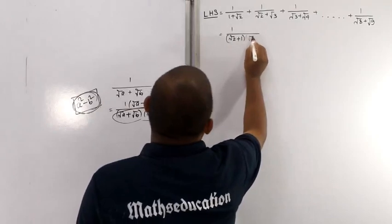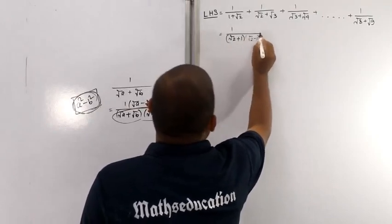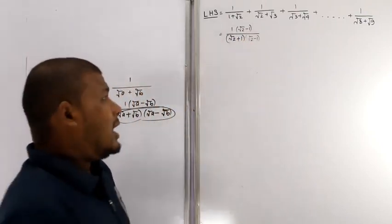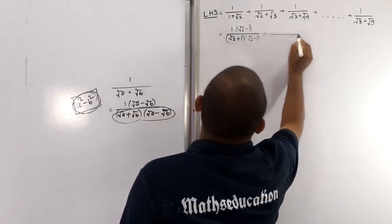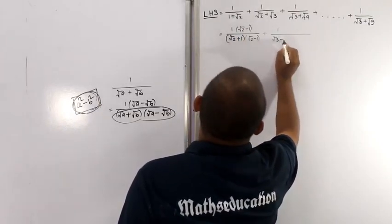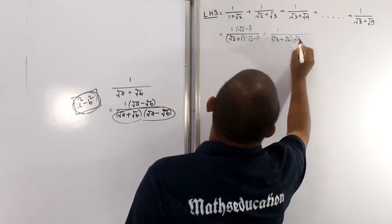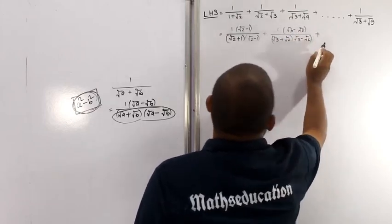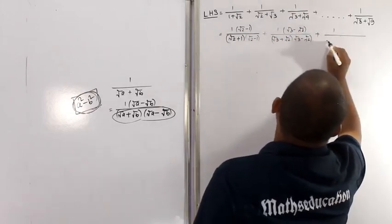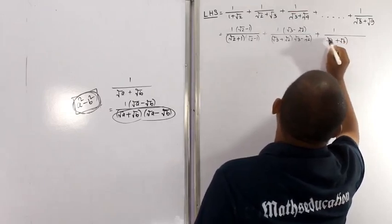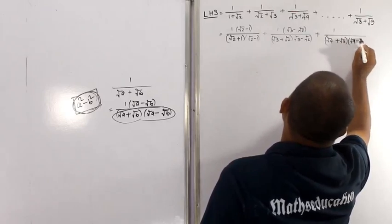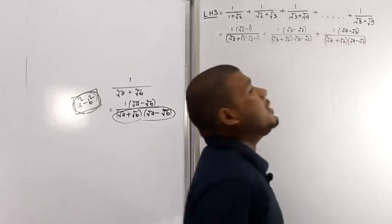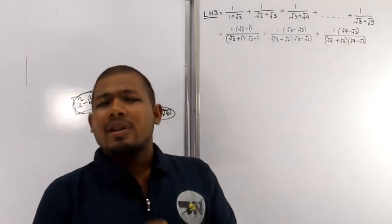The denominator is root over 2 plus root over 1. Multiply numerator and denominator by root over 2 minus root over 1. Then apply root over 3 minus root over 2 multiplied by root over 3 minus root over 2. Then apply root over 4 minus root over 3. This is the product — the equivalent rational form.